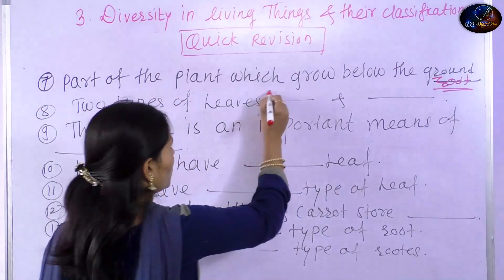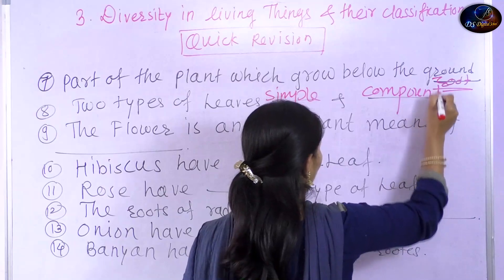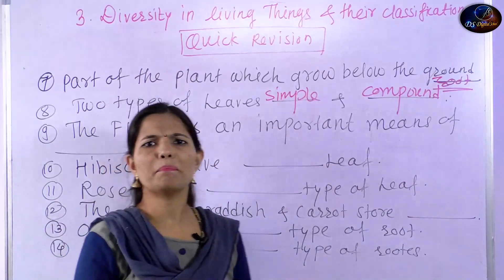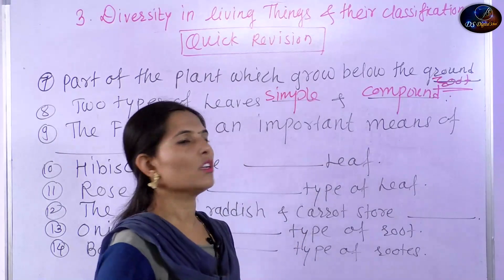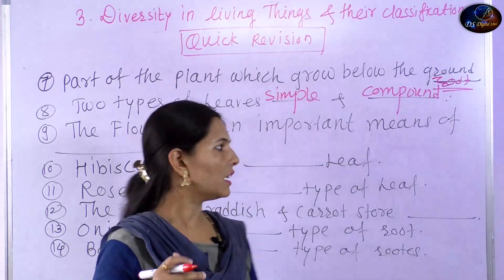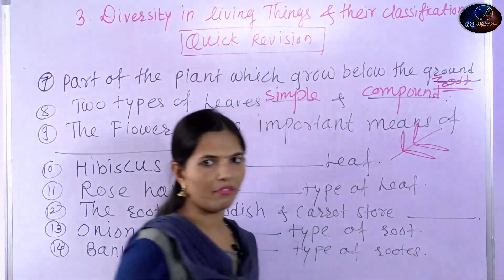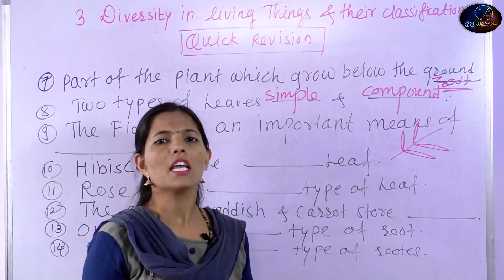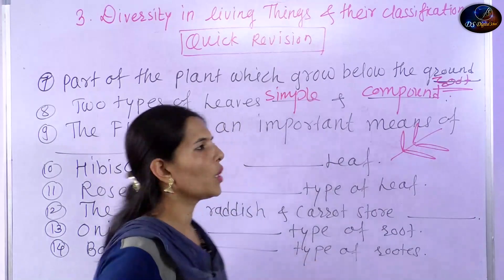What are simple leaves? What are compound leaves? Simple means the leaf blade or leaf lamina is plain — a simple, single leaf. Compound leaf means you have many small leaflets together. So they are compound leaves. Mango leaf is an example of simple leaves. There are two types of leaves — simple leaves and compound leaves.